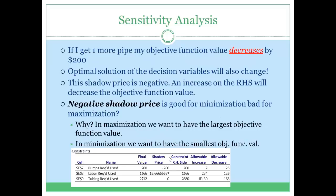What would happen if our shadow price was negative? You can see in this table we have a negative shadow price. You would read this just like a positive shadow price. So if you were to ask how the objective function value would change if you increased the right-hand side of that constraint by 1, you look at the table and see it would change by minus 200. Since it's negative, that means the objective function value would decrease by 200.